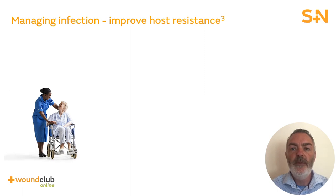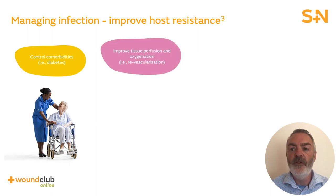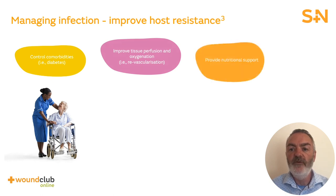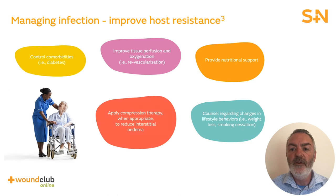Host resistance may be affected both locally and by systemic factors. You can see here some interventions to improve host resistance and control comorbidities, such as diabetes. If we can improve the tissue's perfusion and oxygenation — i.e., revascularise — that will improve the wound bed and provide nutritional support. Counselling regarding changes in lifestyle behaviours, such as weight loss or smoking cessation, will improve the wound's chances of defending itself against bacteria. Applying compression therapy when appropriate can also reduce interstitial oedema.